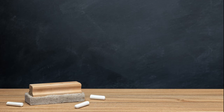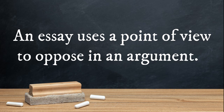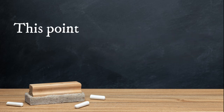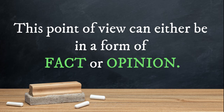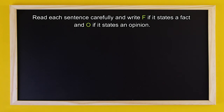Looking back at our previous lesson, we learned that an essay uses a point of view to pose an argument. This point of view can either be in a form of fact or opinion. Now differentiate fact from opinion. Read each sentence carefully and write F if it states a fact and O if it states an opinion.